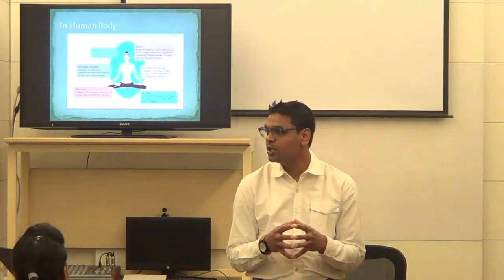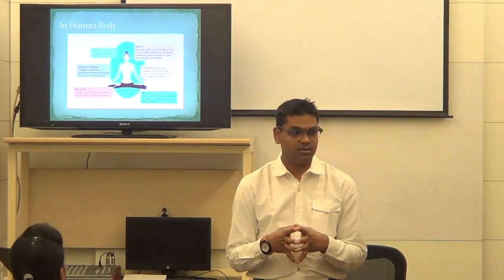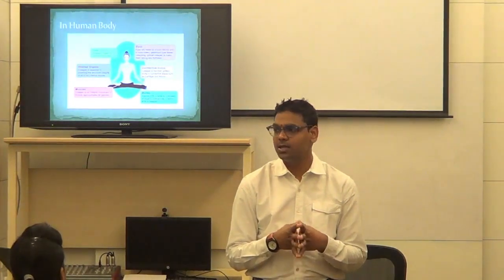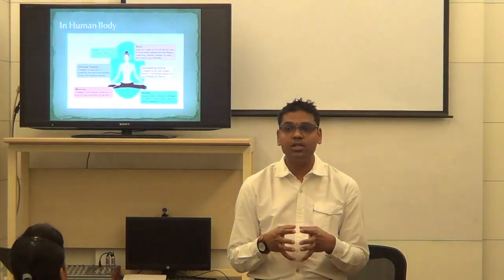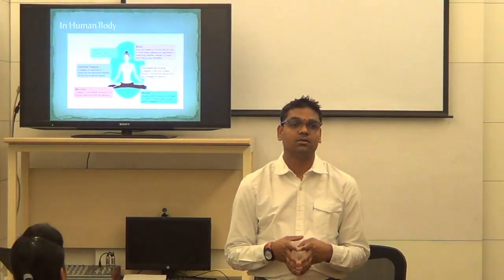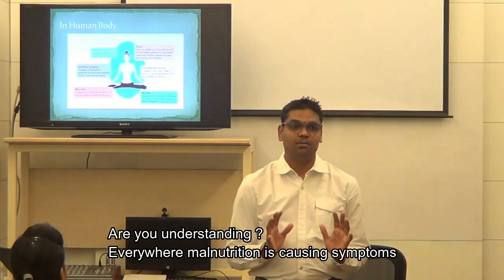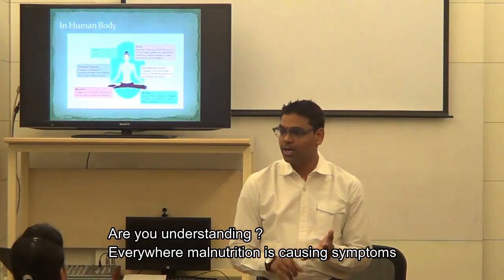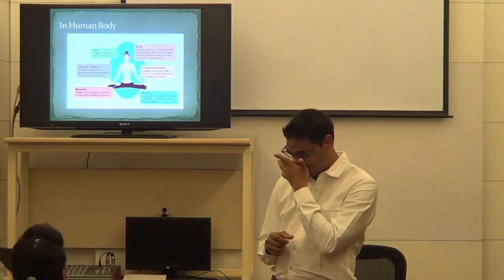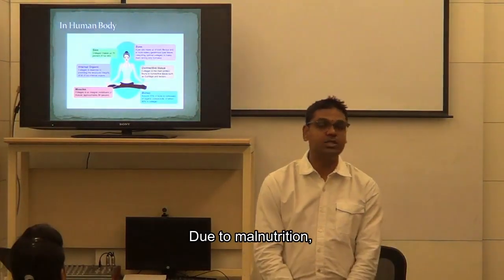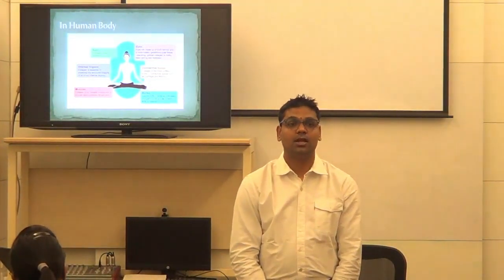Joints — collagen is basically protein. Protein-energy malnutrition, also called PEM. So joints are also affected because the collagen, or the protein, is affected. Joints, bones — and malnutrition. Silica's first symptom is lack of strength or stamina, lack of grit.